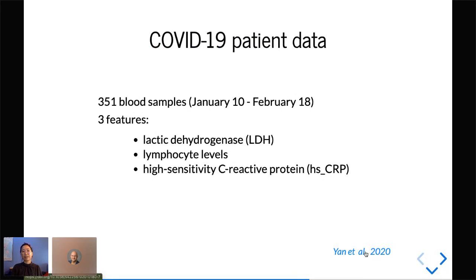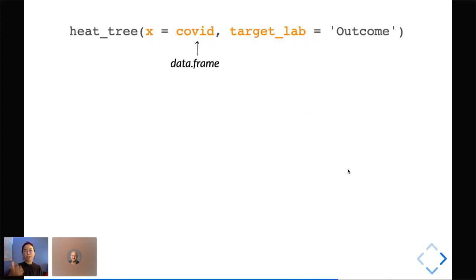Because this is R in Medicine, I wanted to apply treeheatr to a clinical dataset. This dataset contains 351 blood samples of patients who were admitted to the Tongji Hospital in Wuhan, China, from January 10th to February 18th. The task here is to predict whether they survived or not from COVID-19. Three features were selected using their importance score from an XGBoost model: lactic dehydrogenase (LDH), the lymphocyte levels, and high sensitivity C-reactive protein (CRP). What you want to do is put in the code of the data frame, make sure it's all clean and in tidy format. All you need to do is put that in and define that you want to predict the outcome.